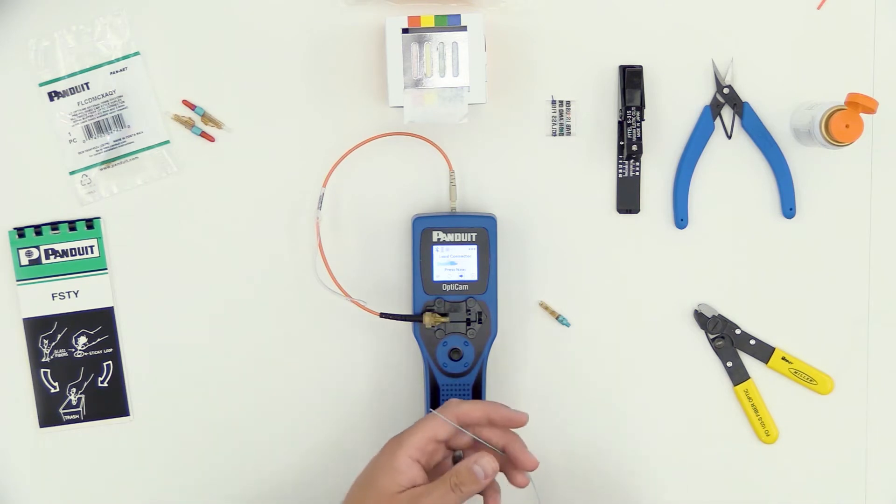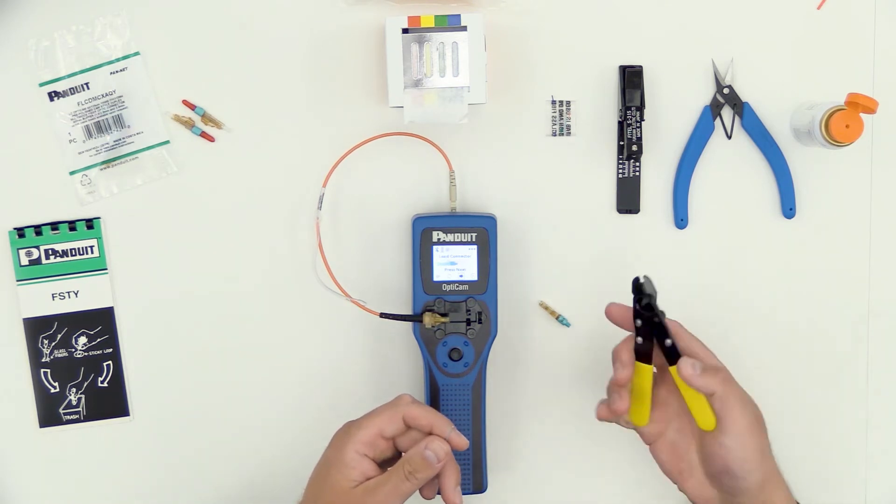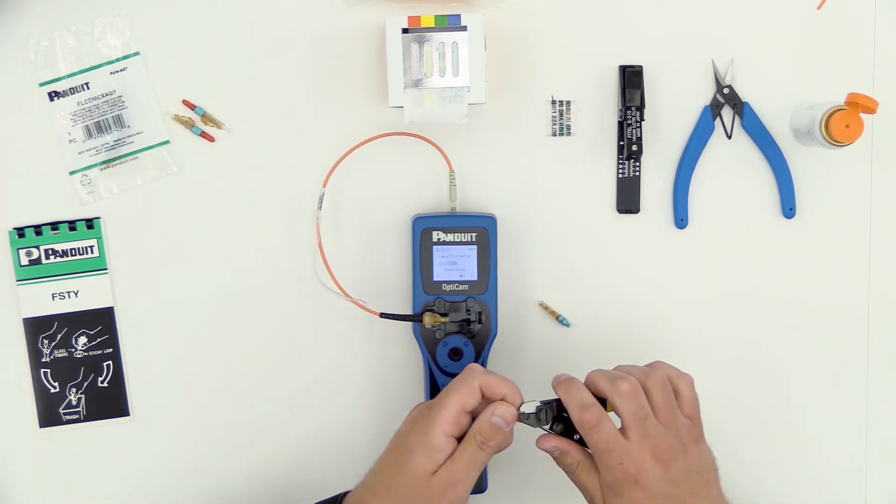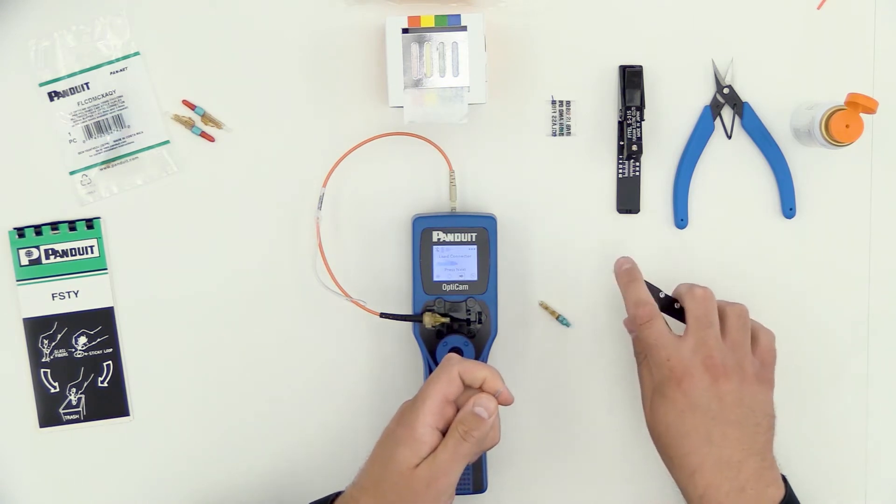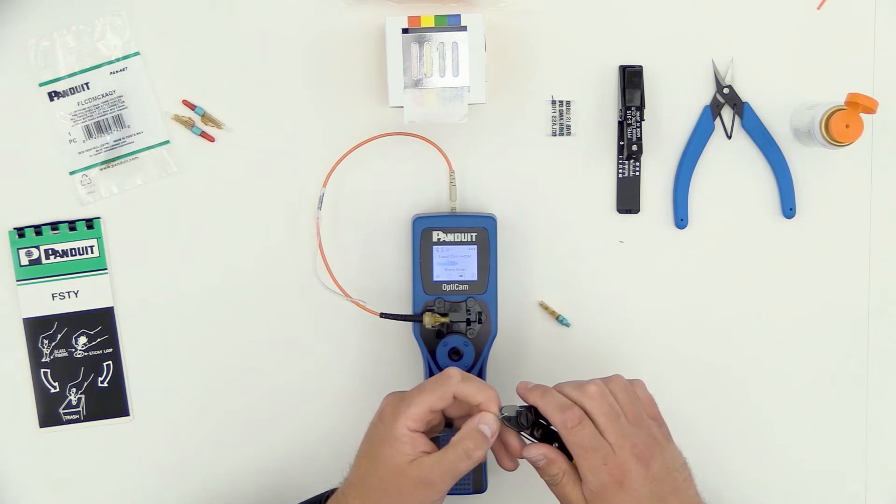What I'm going to do is I'm going to take the stripper, I want to take this buffer off in small increments. If you try to take too much off at a time, you're more likely to break the fiber.